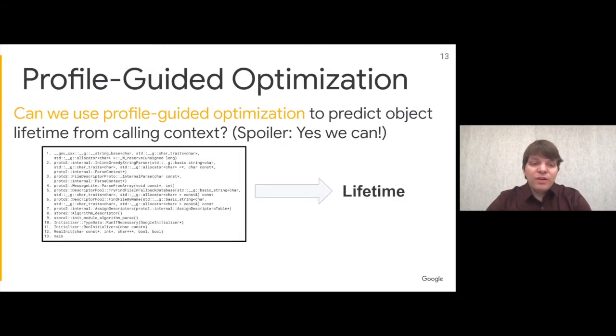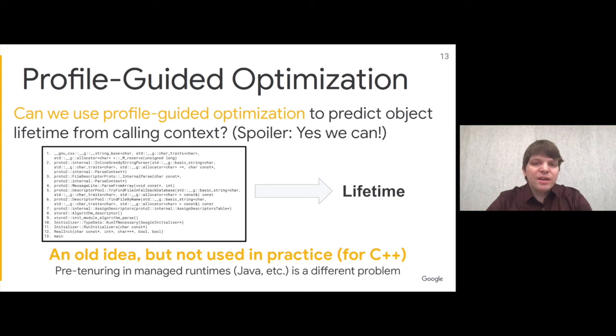Fortunately, there has been previous research on predicting object lifetime at allocation time, showing that the stack trace when you allocate an object is a good predictor of its lifetime. This has been used in managed runtimes like Java Virtual Machines for tasks such as pre-tenuring. However, this work differs from our scenario because it is best effort. In contrast, we need to make a good prediction every single time we do an allocation.